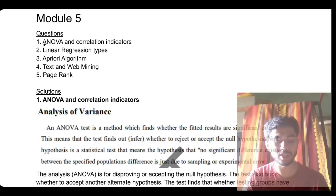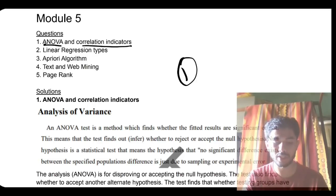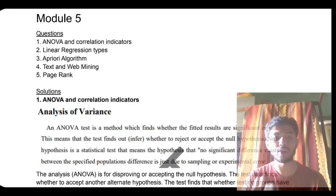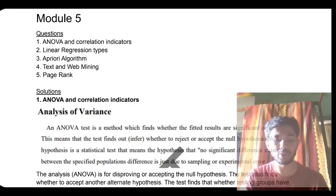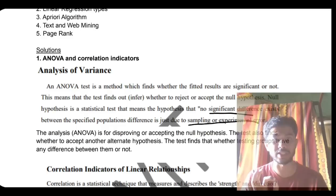The first question is: what is ANOVA and correlation indicators? ANOVA is nothing but Analysis of Variances — variances means differences. If there are differences in something, you are analyzing those differences across different objects. It is not always the case that a difference means they are totally different; it might be due to some sampling or experimental error.